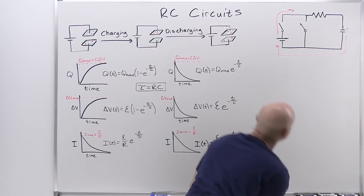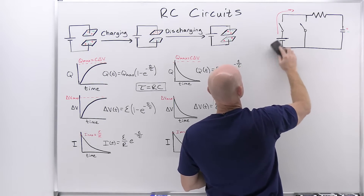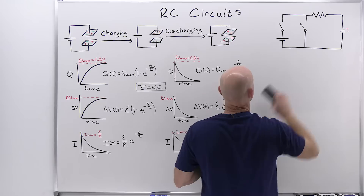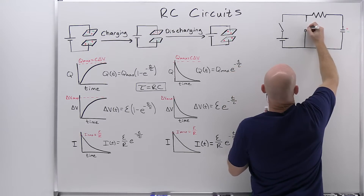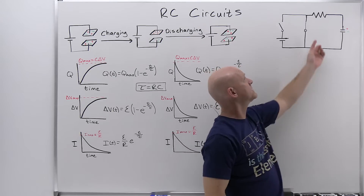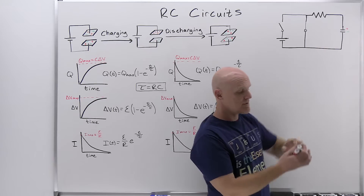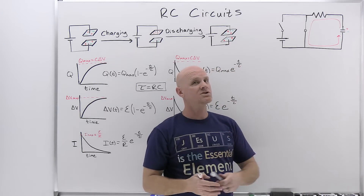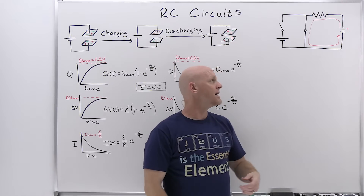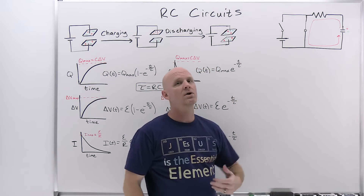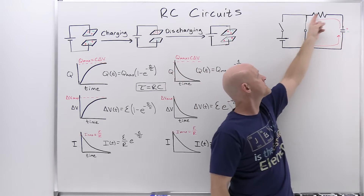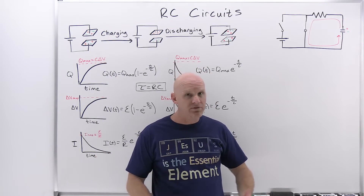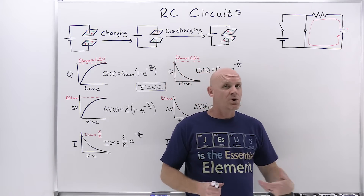The current we used to charge it was transient and has stopped. Now we close the other switch, and we have a complete loop involving just the resistor and the capacitor. The charge that's built up on the capacitor can now flow back around in the other direction through the resistor until the plates have the same charge once again. Notice the EMF — the battery — is not involved in this part at all. This continues until fully discharged, with current initially flowing through the circuit until the plates of the capacitor once again have the same charge, at which point current completely stops.